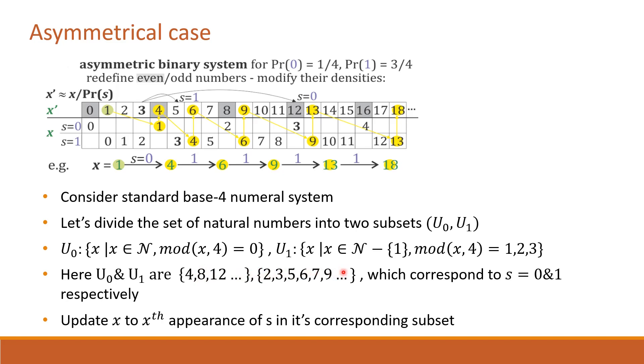As briefed before, 4 is the first appearance of 0, 8 is the second appearance of 0 and so on. Similarly, as we have already excluded 1 from U1, 2 is the first appearance of 1, 3 is the second appearance of 1, 5 is the third appearance and so on.